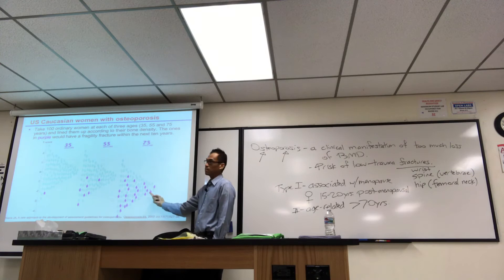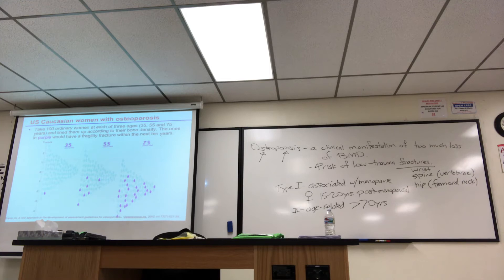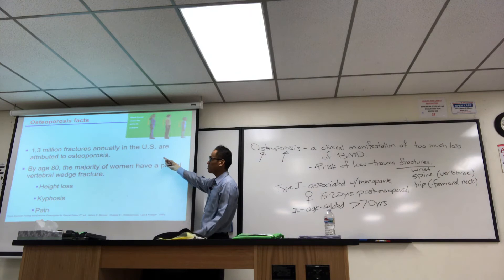Obviously, it's age-related. It can have to be a study with women, so you also have the type 1s associated. So just to give students a general idea, this is basically an age-related disease. Your risk increases as you get older. So to give you some numbers here, the slides are a little bit old, but if anything, it's increased. The 1.3 million fractures annually, okay, are attributed to osteoporosis. By the age of 80, the majority of women have had a partial wedge fracture.